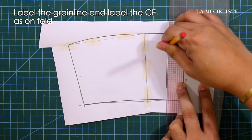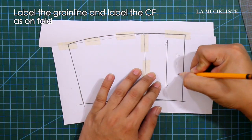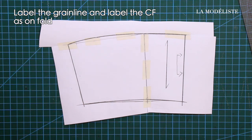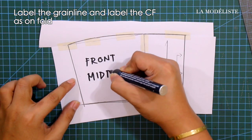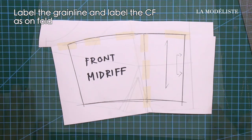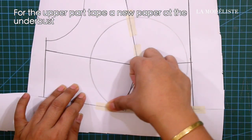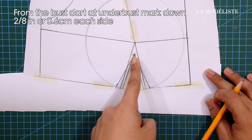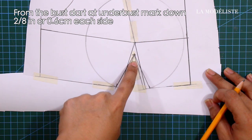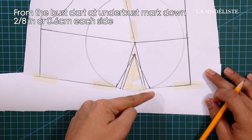Label the grainline and label the center front as on fold. For the upper part, tape a new paper at the underbust. And from the bust dart at underbust, mark down 2/8 of an inch or 0.6 centimeter each side.